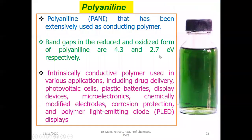What is polyaniline? Polyaniline is a polymer of aniline. It has been extensively used as a conducting polymer because of its variable band gap. In its reduced state, its band gap is reported as 4.3 electron volts, and in the oxidized form, its band gap is reported as 2.7 electron volts. Because of this tunable band gap, polyaniline is used in various applications including drug delivery, photovoltaic cells, plastic batteries, display devices, microelectronics, electrodes, and chemical sensors.